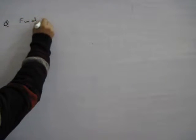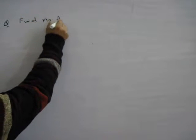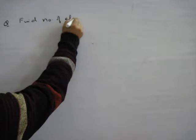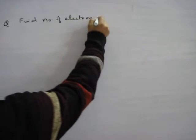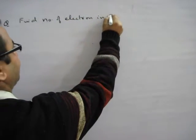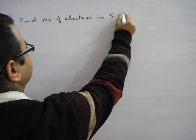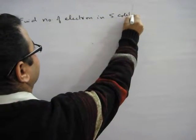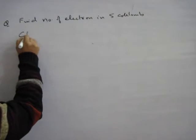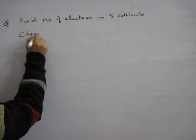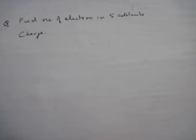Find the number of electrons in a 5 Coulomb charge. In 5 Coulombs, how many electrons are there?